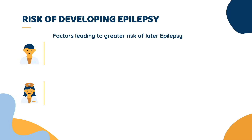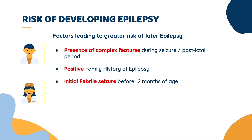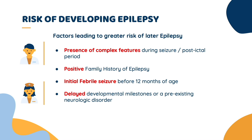Factors associated with a substantially greater risk of later epilepsy include the presence of complex features during the seizure or postictal period, a positive family history of epilepsy, an initial febrile seizure before 12 months of age, delayed developmental milestones, or a pre-existing neurologic disorder. The risk of developing epilepsy increases with the number of complex features, with 49% of children whose seizures were focal, prolonged, and recurred within 24 hours developing epilepsy by adulthood.